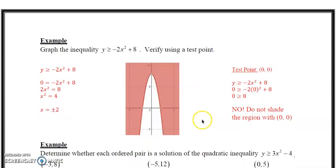Let's look at a second example. It says graph the inequality y is greater than or equal to -2x squared plus 8. Verify using a test point. So we have y is greater than or equal to -2x squared plus 8. So now what we do is we solve for x. This one doesn't need to be factored because there's no b value in the trinomial.